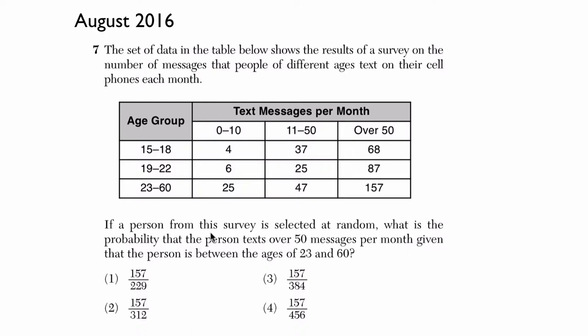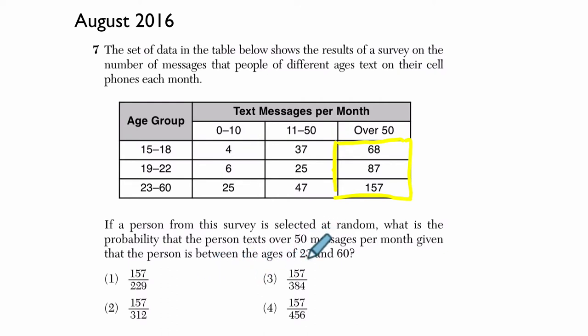If a person from this survey is selected at random, what is the probability that the person texts over 50 messages per month, given that the person is between the ages of 23 and 60? So we know they're between 23 and 60, so they're in this group right here.